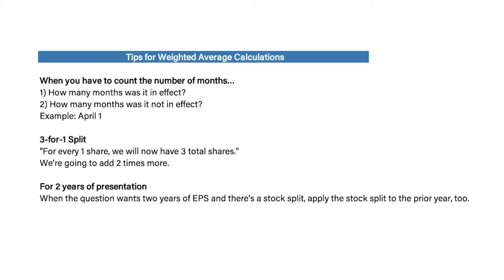Here are a few tips for making weighted average calculations. When counting the number of months for the weighted average, make sure you're counting correctly — count how many months it was in effect, then double-check by confirming how many months it was not in effect. For example, if additional shares are issued on April 1st, they were in effect for nine months, and not in effect for January, February, and March — three months — totaling all twelve months.